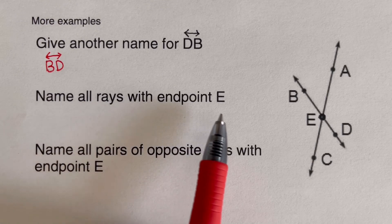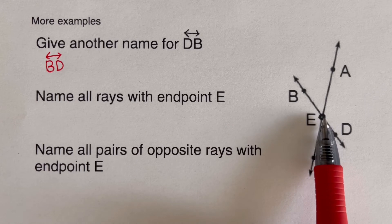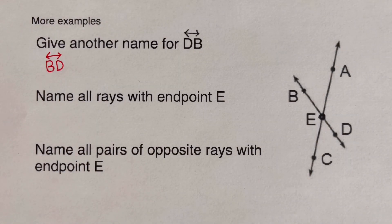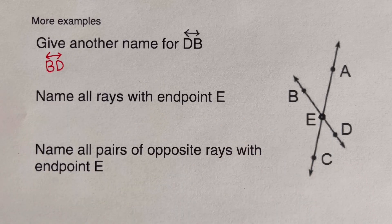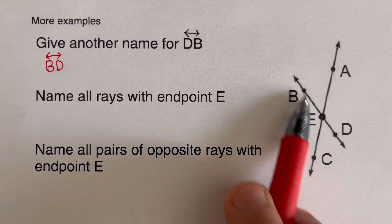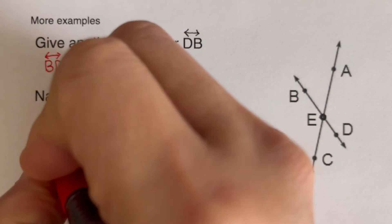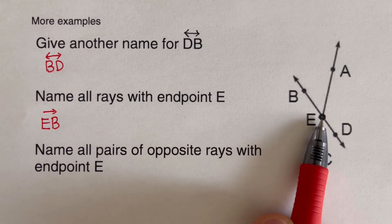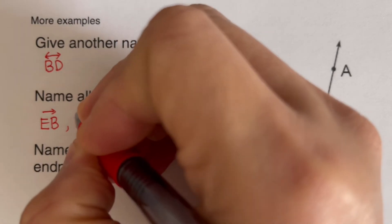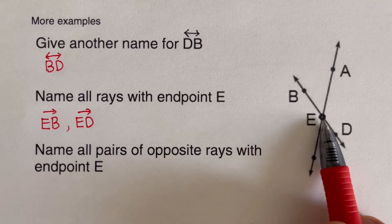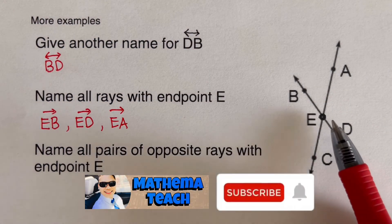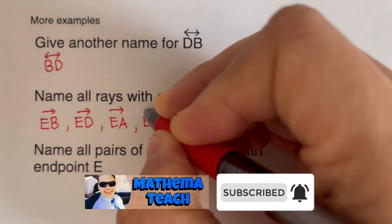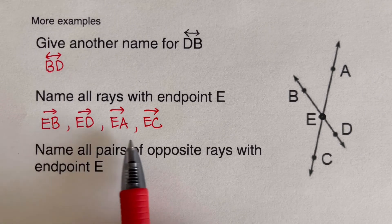Name all rays with endpoint E. A ray is a subset of a line with a fixed starting point but no endpoint. The fixed endpoint here is point E. The four rays are: ray EB, ray ED, ray EA, and ray EC — each with the ray symbol on top. These are all four rays with endpoint E.